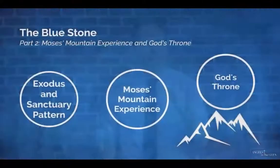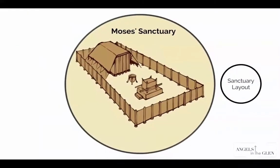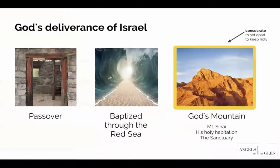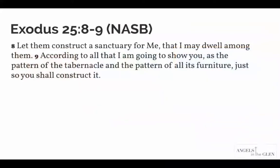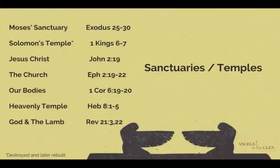Let's do a quick review. Moses's sanctuary pattern layout: Passover, baptized through the Red Sea, brought to God's holy mountain — consecrated and set apart. God instructs Moses in Exodus 25:8, 'Let them construct a sanctuary for me that I may dwell among them, according to the pattern of the tabernacle and all its furniture.' There are seven distinct types of temples or sanctuaries in the Bible: Moses's sanctuary, Solomon's temple, Jesus Christ, the church, our bodies, the heavenly temple, and God and the Lamb.